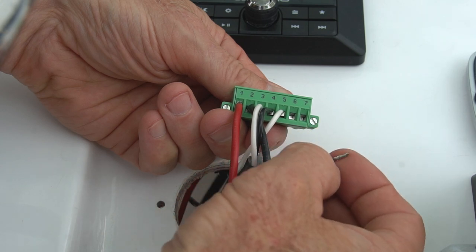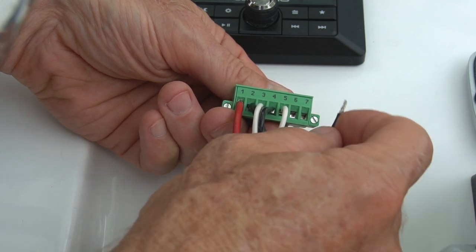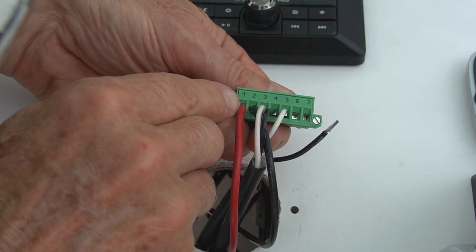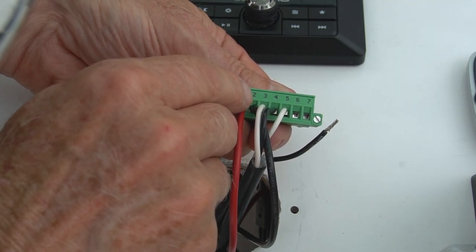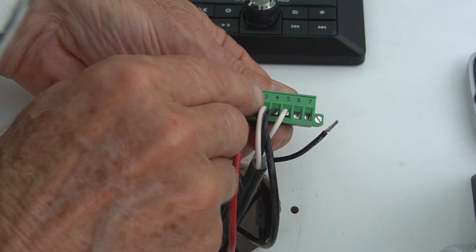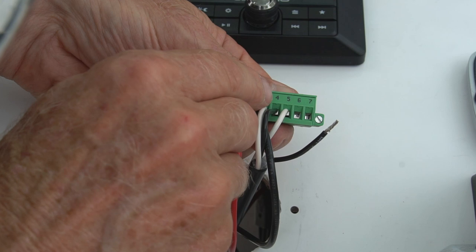The ALC comes with a removable terminal strip, which makes it very easy to wire up. Terminal one is your 12-volt positive. Two is battery negative. Three is the white port actuator wire. Four is the black port actuator.